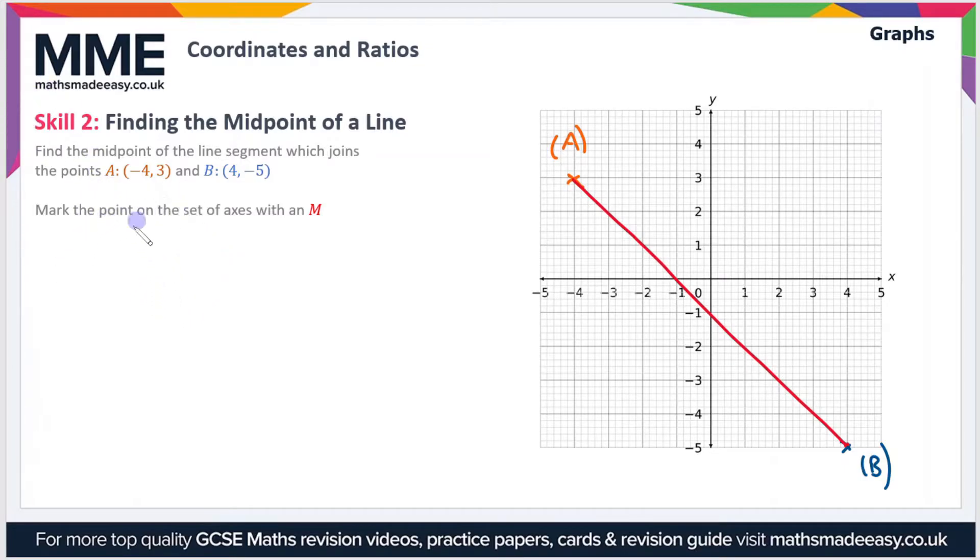To find the midpoint of the line, all we do is take the average of the x and y coordinates from the two points we're given. So let's do the x coordinates first. We can say that the average is x1 plus x2 divided by 2.